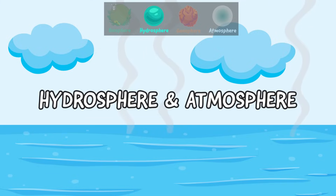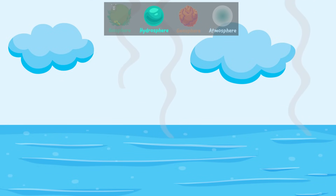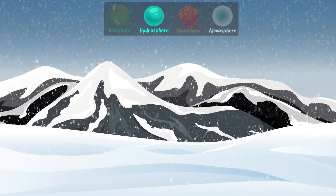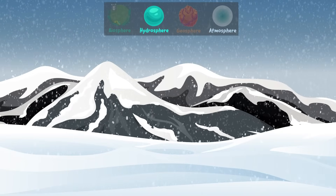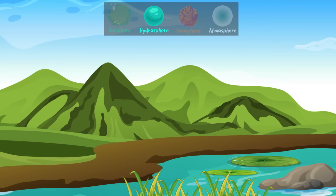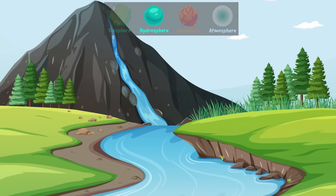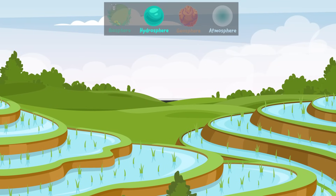Water, mostly from oceans, evaporates into the atmosphere as water vapor, then condenses to form clouds, and then falls back to the earth as rain or snow. Snow melts into rivers, and rivers flow back into oceans. This constant cycle shapes our climate, transports minerals across the globe, and provides us fresh water for drinking and farming.